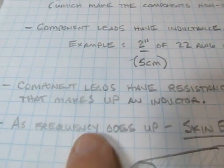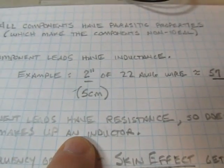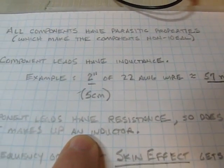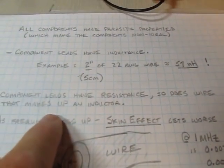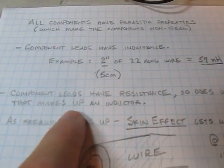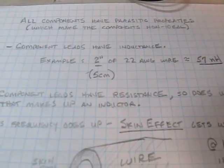Also, the component leads, since they're wires or they're terminations or whatever they might be, they've got resistance. We may or may not be able to neglect that. Also, if you've got a coil of wire that makes up an inductor, that's wire as well. So that would have some resistance.